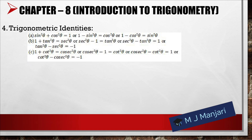Next we have trigonometric identities. The first identity is sin²θ + cos²θ = 1, which can also be written as 1 − sin²θ = cos²θ. The second identity is 1 + tan²θ = sec²θ, which can be written as sec²θ − 1 = tan²θ, or sec²θ − tan²θ = 1, or tan²θ − sec²θ = −1.